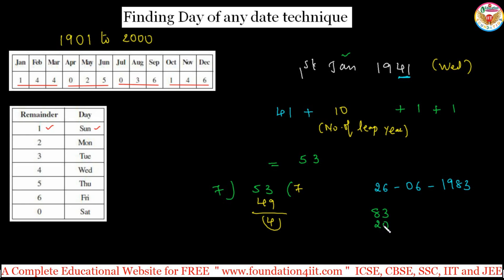20, because 4 times 20 is 80. 83 divided by 4, the quotient is 20. Next, June code is 5. The date is 26.